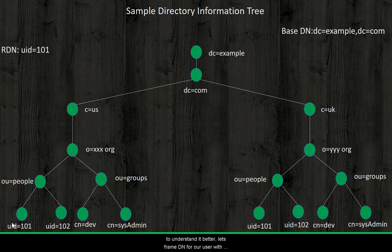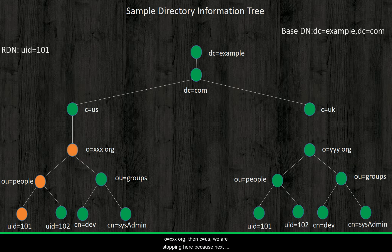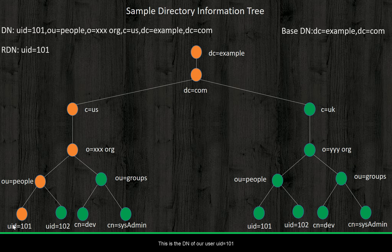To understand it better, let's frame the DN for our user with UID equal to 101. First comes the RDN of the entity for which we have to get the DN. Secondly, the path to base DN from RDN. In the path, first comes OU equal to people, then next comes OU equal to triplex ORG, and then comes C equal to US. We are stopping here because the next parent entity is part of the base DN. And finally we are appending the base DN. This is the DN for our user UID equal to 101.